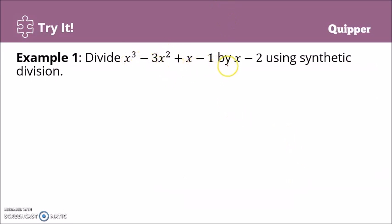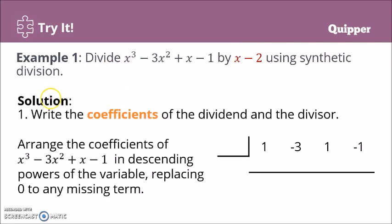Divide x³ minus 3x² plus x minus 1 by x minus 2 using synthetic division. Note that the divisor is a linear expression — the exponent of x is 1. We write the coefficients of the dividend and the divisor. Take note: the divisor is linear, meaning its exponent is 1.